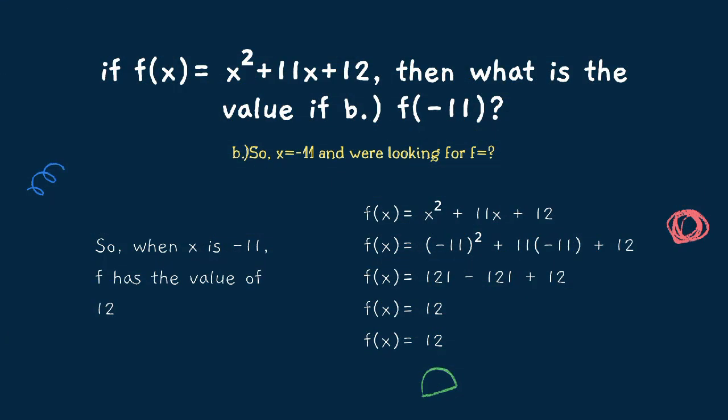For part (b) of example 4, using the same function f(x) = x² + 11x + 12, what is the value if f equals negative 11? We substitute x with negative 11: f(-11) equals (-11) squared plus 11 times (-11) plus 12. Negative 11 squared is 121; 11 times negative 11 is negative 121; plus 12. So 121 minus 121 is 0, added by 12 is 12. Example 4 has answers: (a) 746/49 or 15.22, and (b) 12.